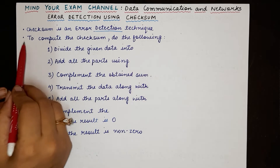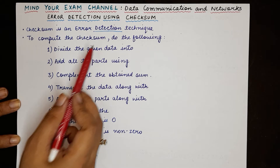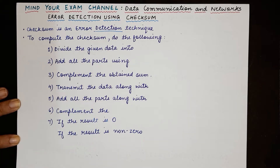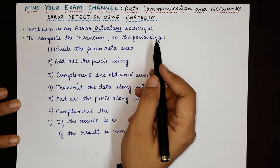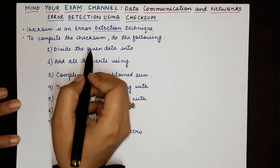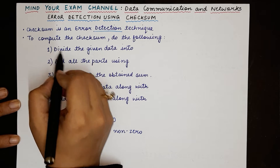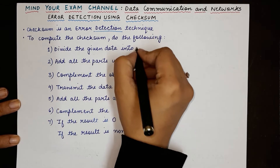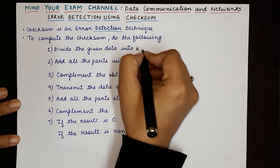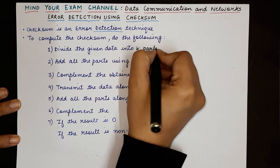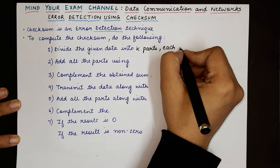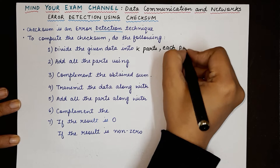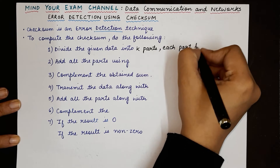So how to calculate the checksum? To calculate the checksum, let us first see all the steps and then we will see an example. To compute the checksum, you have to divide the given data into k parts such that each part is of m bits.